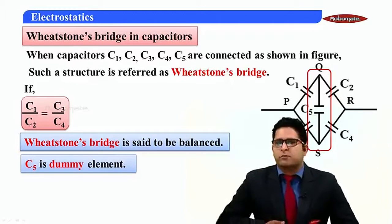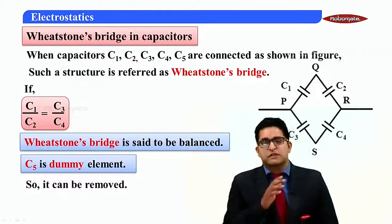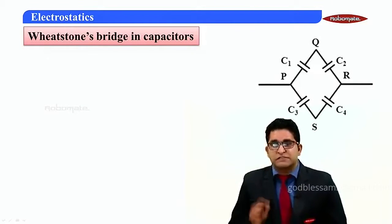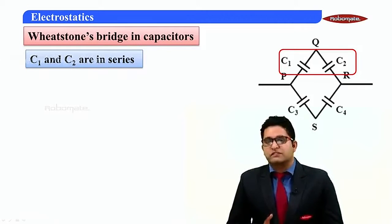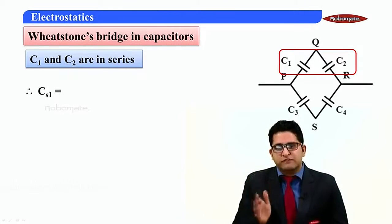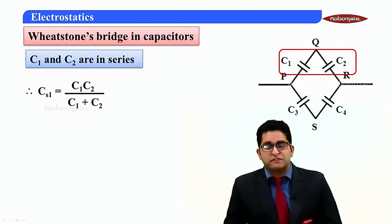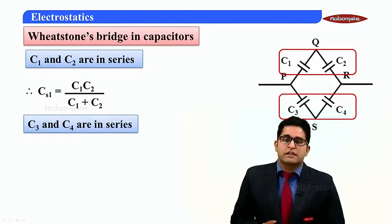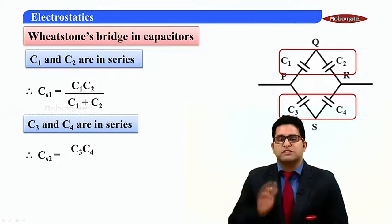If C1/C2 = C3/C4, then the bridge is balanced, and the 5th capacitor connected between points Q and S is referred to as a dummy element or an ineffective element. As it is ineffective, it is not playing any role in the circuit, so this capacitor can be removed. In section TQR, C1 and C2 are connected in series, so the resultant capacity CS1 = C1·C2/(C1+C2). In section PSR, C3 and C4 are connected in series, so CS2 = C3·C4/(C3+C4).